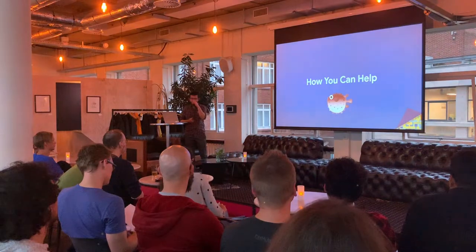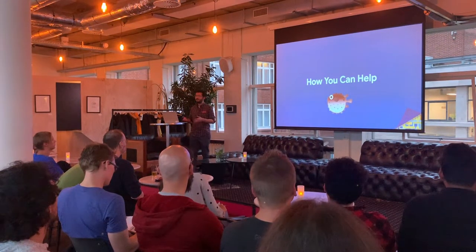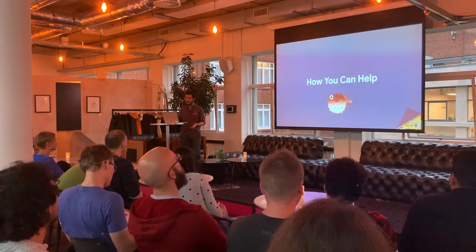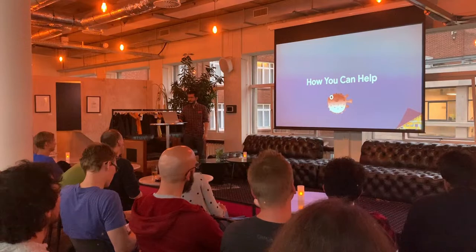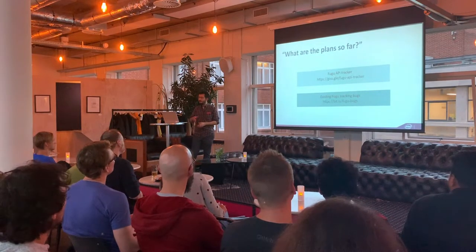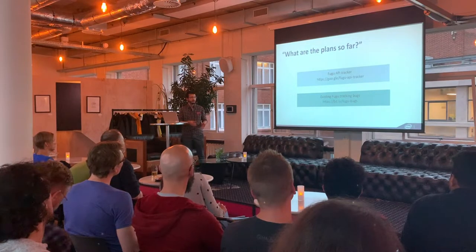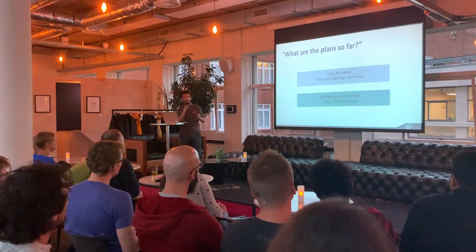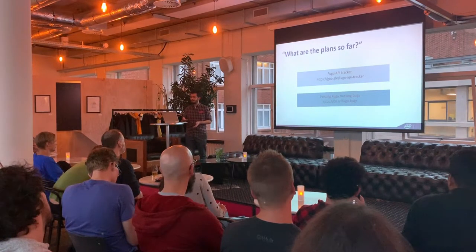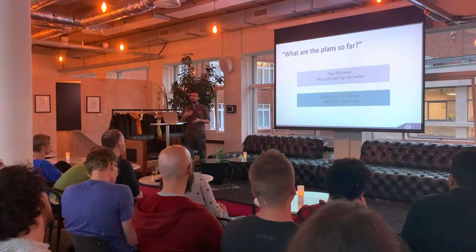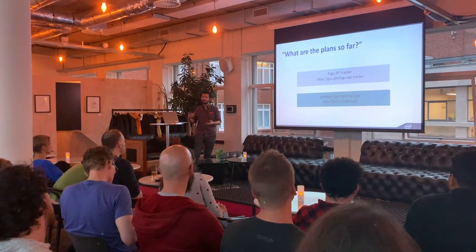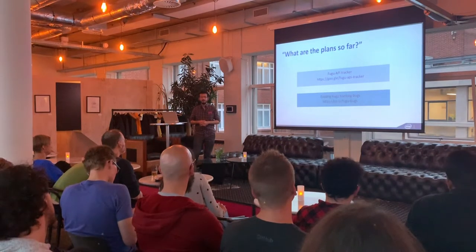This all leads us to the next section: how you can help. An API without users is really irrelevant — your input, feedback, and interest are really important to us. One link provides a spreadsheet listing APIs, priorities, and shipping estimates, maintained by Google. Another lists all Chromium bugs with the Project Fugu label so anyone can look at individual tracking bugs and check progress more closely. Some bugs don't have much information yet, especially if no one has started working on them, but feel free to ask for more information.